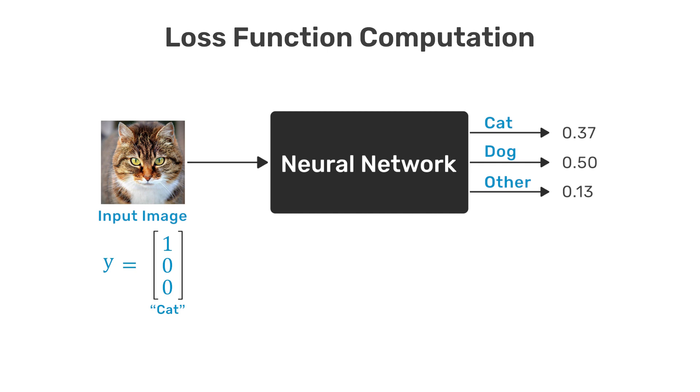So the vector 1 0 0 represents a cat because we define the first output from the network to represent the probability that the input image is a cat. Likewise the representation for a dog would be 0 1 0 and for the third category the representation would be 0 0 1. The particular order is arbitrary but it needs to be consistent with the network design and the data set.